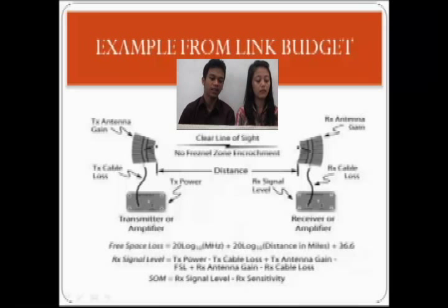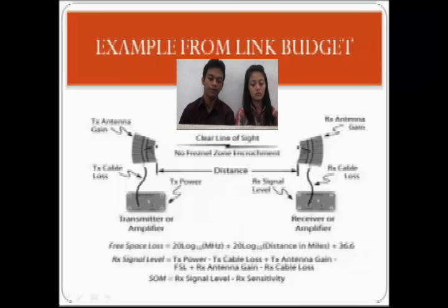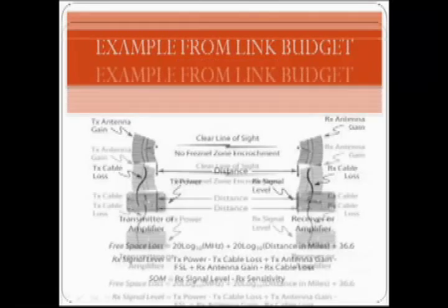The TX antenna gain is the radiated power from the antenna that we use. For example, if we use an omnidirectional antenna of 12 dB, the TX antenna gain is 12 dB. RX antenna gain is the power produced from the RX antenna. For example, we use a grid antenna of 15 dB. RX cable loss is almost the same as TX cable loss — it just happens in the RX area or RX antenna. RX sensitivity is the sensitivity of the RX antenna to catch the Wi-Fi signal from the TX antenna. We can show all of the parameters in TX if we build a Wi-Fi infrastructure.